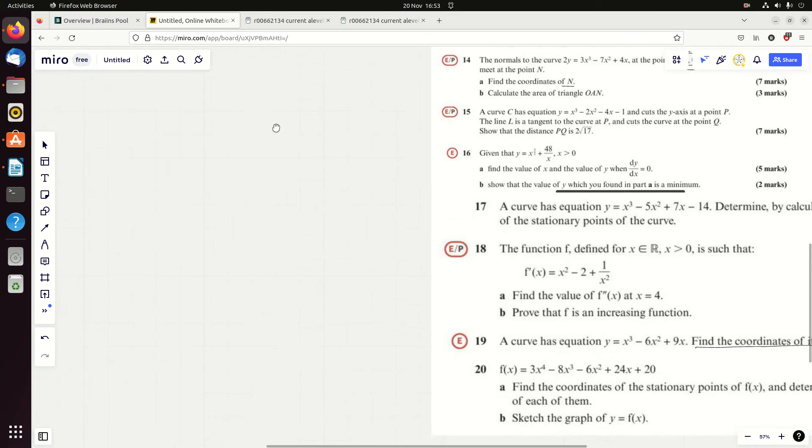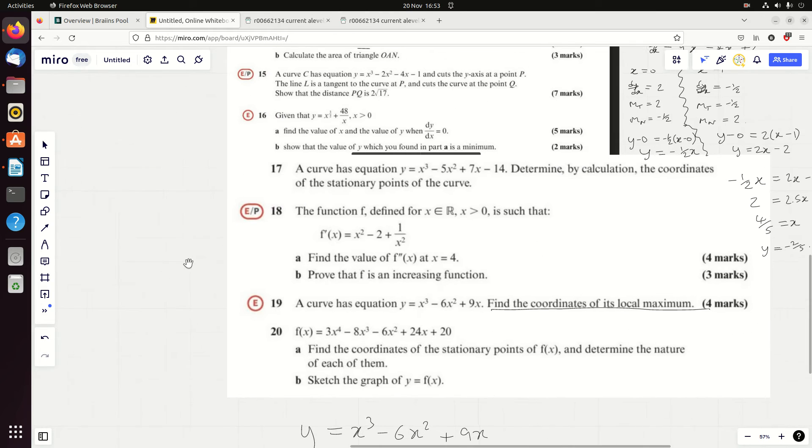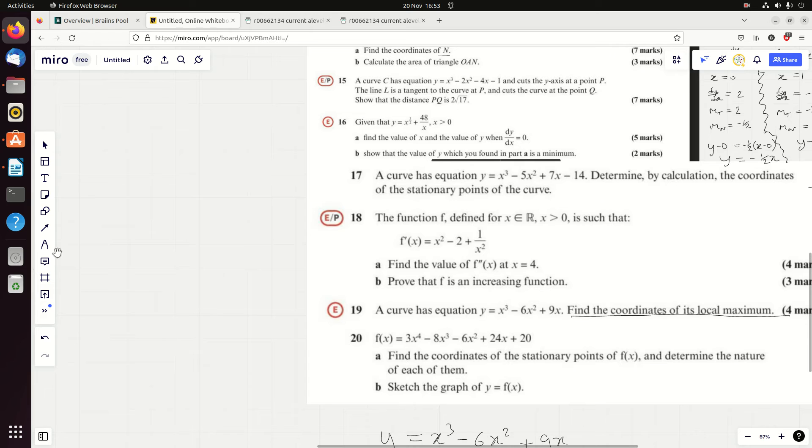Let's go through a typical question. I'm going to go through number 20 actually, because I just went through number 19 and I get bored if I go through the same question. We've got y equals 3x to the 4 minus 8x cubed minus 6x squared plus 24x plus 20, and it wants us to find the stationary points.